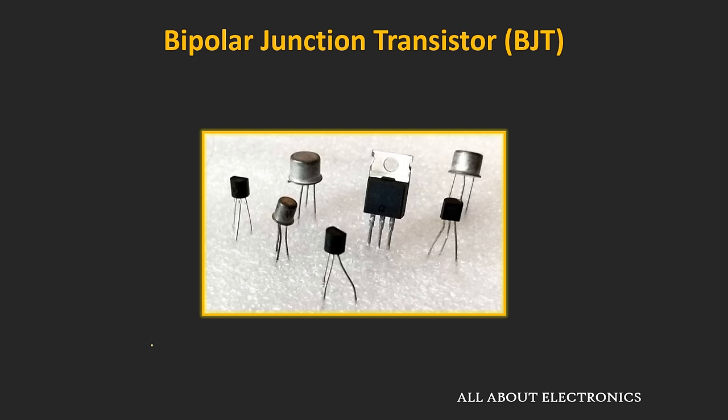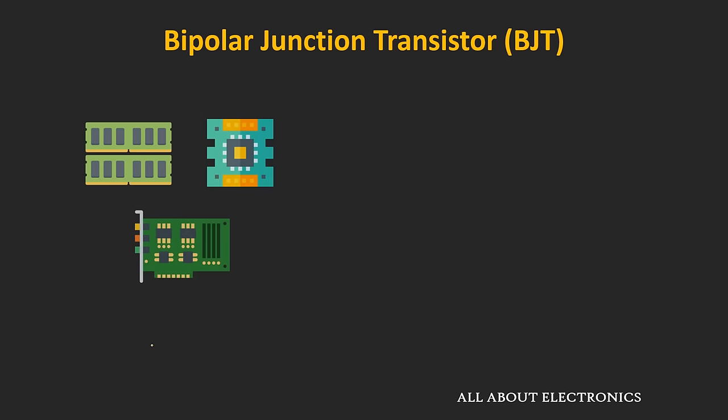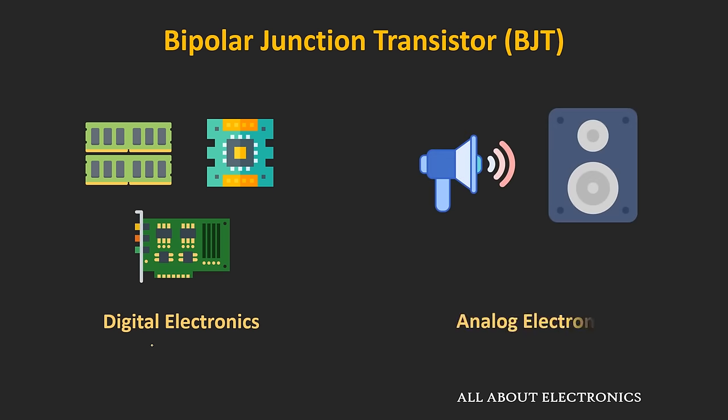The bipolar junction transistor, or the BJT, is a three-terminal semiconductor device which can act as a conductor or insulator based on the applied input signal. And due to this property, the transistor can be used as a switch in digital electronics, or it can be used as an amplifier in analog electronics.